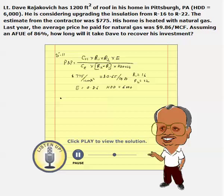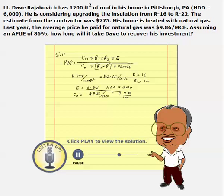The only remaining thing is to calculate CE, the cost of energy. Dave is paying $9.86 per MCF. Remember, MCF is basically 1 million BTUs, so the price would be $9.86 per million BTUs.